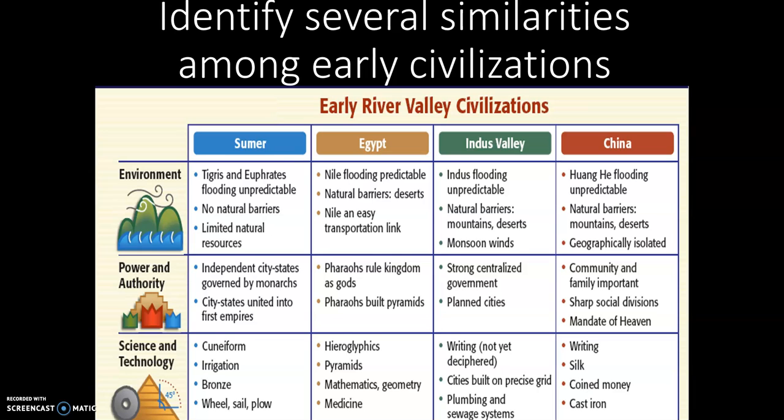Here we have four early River Valley civilizations, and we will eventually talk about all of these in turn. Notice that the chart has several similarities across these three categories. Identify some of those similarities that exist in all of these disparate civilizations — from Sumer in Mesopotamia to Egypt to the Indus River Valley all the way to the Yellow River in China.